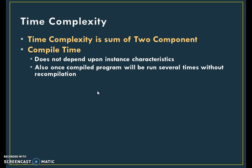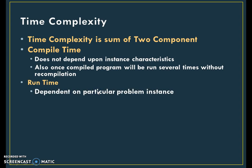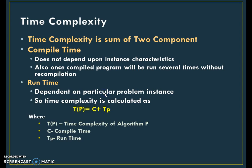As we all know, once a program is compiled, it can be run several times. Hence, we can say that compile time is a constant time. Runtime always depends upon the input and output — that means it always depends upon the problem instance. Time complexity is calculated as compile time plus runtime, where compile time is a constant.